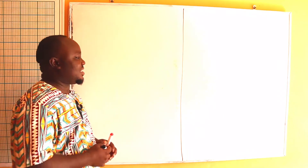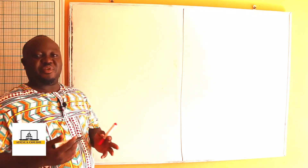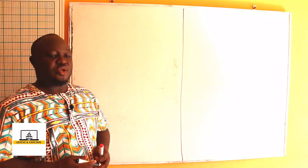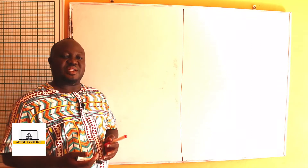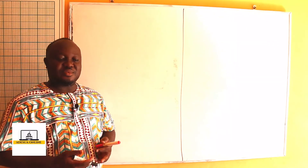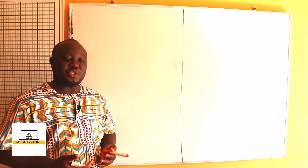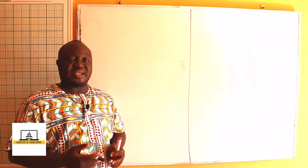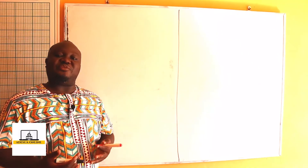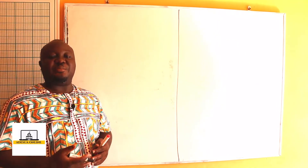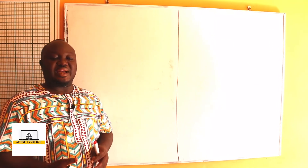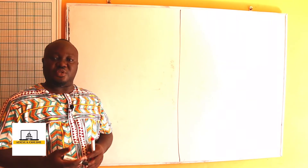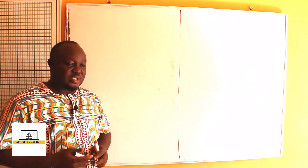Now today we are going to take a look at various types of quadrilaterals. We are going to look at the parallelogram, the trapezium, the rhombus, and then the kite, and we are going to learn how to find the perimeter and area of those various types of quadrilaterals.